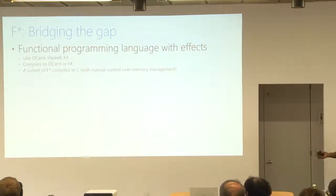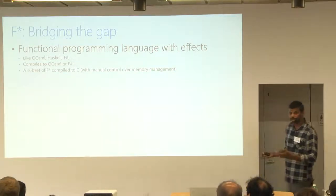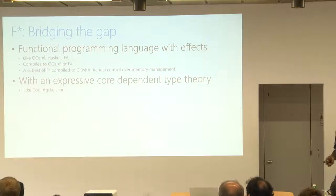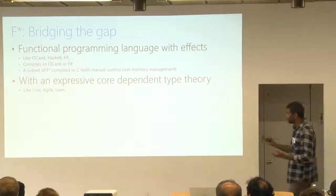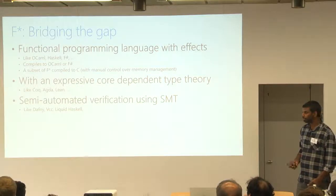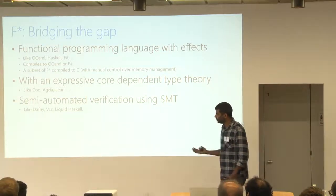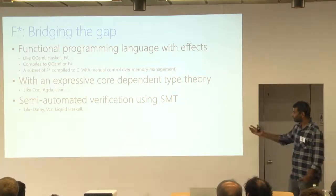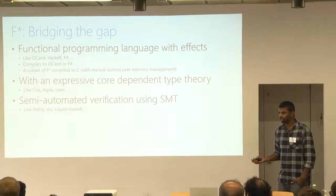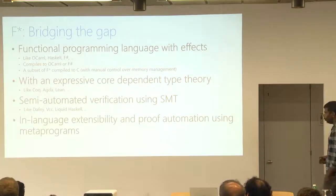F-star is a functional programming language with effects. So it's like OCaml or F-sharp. It compiles to OCaml and F-sharp, actually. And a subset of it compiles also to C. It's got a core logic that's based on dependent type theory. So it's as expressive as Coq or Agda or Lean. But it's got SMT-based automation as a first-class concern. So F-star provides an encoding to SMT. We use Z3 as our SMT solver usually. So it gives you a verification experience that's trying to approach something like Dafny or Liquid Haskell or VCC.